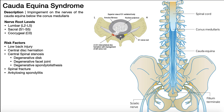The risk factors are going to be things that can narrow the vertebral canal and potentially compress the cauda equina. The first one is simply a low back injury — generally due to poor lifting mechanics or lifting something too heavy. Central disc herniation is another risk factor; if the disc is directly going posteriorly centrally, that's going to have the most impact on the cauda equina because it's going directly into the vertebral canal. Also, central spinal stenosis.